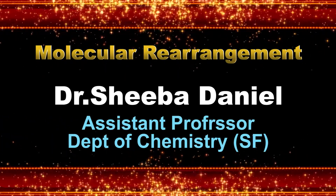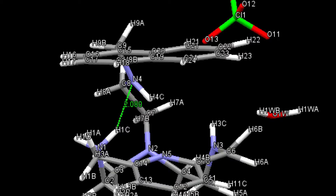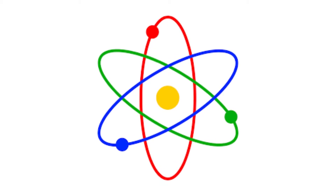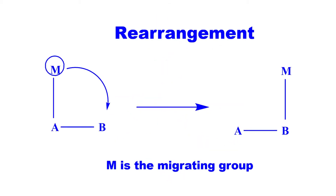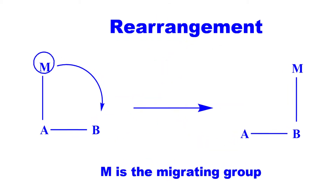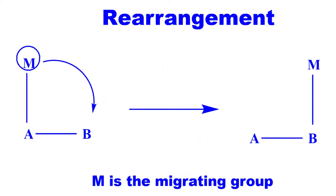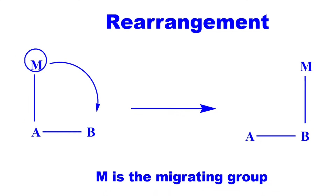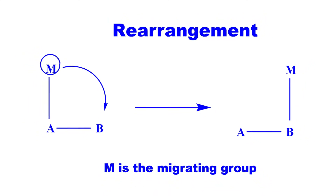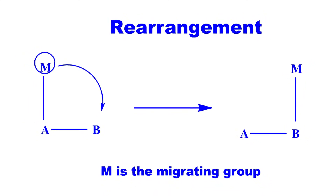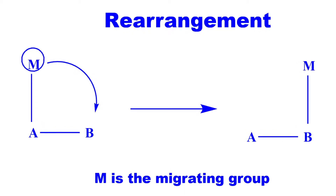Hi everybody, now we are going to learn about the topic molecular rearrangement. What do you mean by molecular rearrangement? The term rearrangement refers to the migration of an atom or group of atoms from one atom to another within a molecule or from one molecule to another.